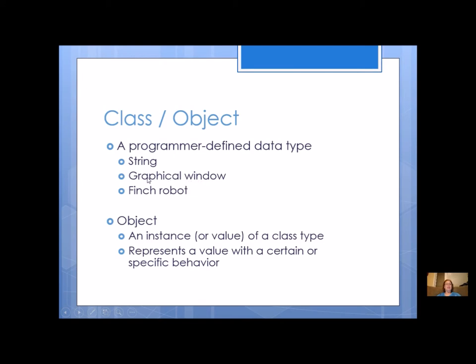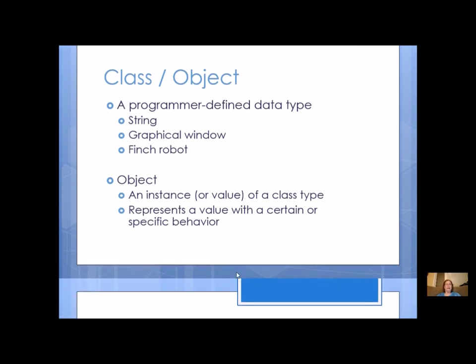It was an object of a class, and also in our Finch robots. A Finch robot is a class, and we use an object from that class. An object is an instance or value of a class type. It represents a value with a certain specific behavior, which is defined by the class. All methods are defined in a class.